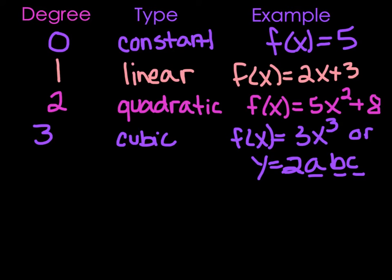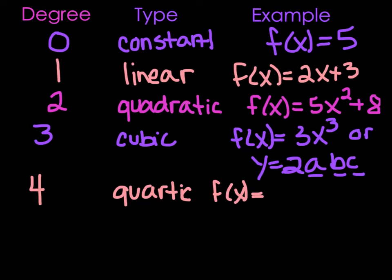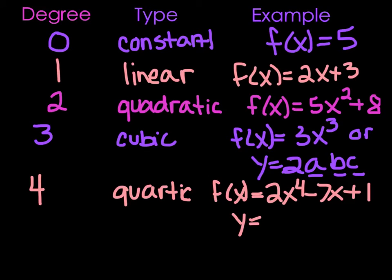After 3 comes 4. If something is to the fourth power, we call it quartic. For example, f of x equals 2x to the fourth minus 7x plus 1, as long as the highest power is 4. It doesn't just have to be x — something like y equals 9wx squared y would still be quartic because it has four variables. Anything after 4, we don't have a special name — we just call it 5th degree, 6th degree, 7th degree, and so on.